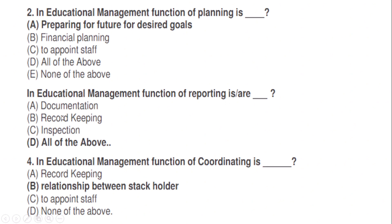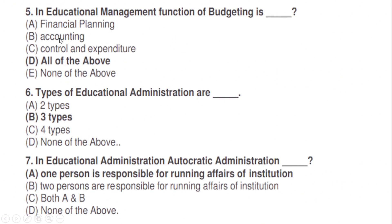In educational management, the function of reporting is: correct option D — all of the above, meaning (a) documentation, (b) record keeping, and (c) inspection. The function of coordinating is: correct option B — relationship between stakeholders. The function of budgeting: correct option D — all of the above, meaning financial planning, accounting and control, and expenditure.